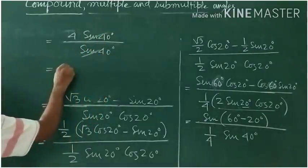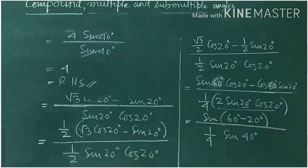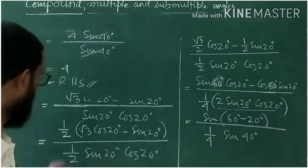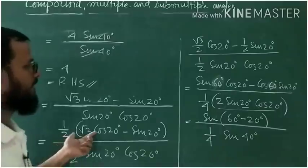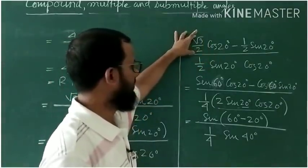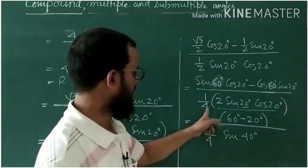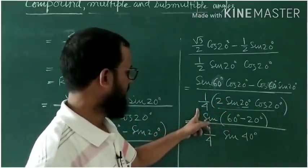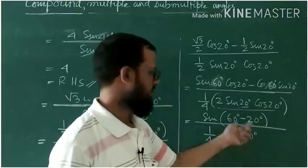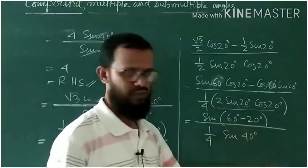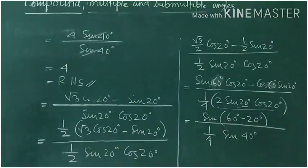The sin(40°) terms cancel and the result is 4, which equals the right-hand side. The innovations used were: multiplying numerator and denominator by ½, recognizing sin(60°) = √3/2 and cos(60°) = ½, applying sin(A−B) = sinA·cosB − cosA·sinB in the numerator, and applying sin2A = 2sinA·cosA in the denominator. In this way the formula can be applied to solve the question.